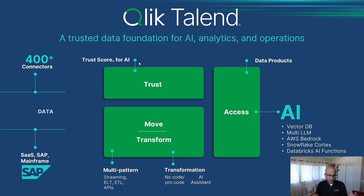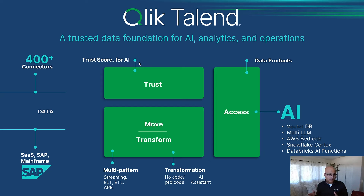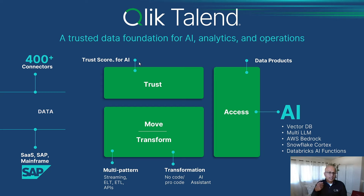Many customers are trying to address the need to bring in information and data from a variety of different sources — from SaaS services to databases to SAP ERP systems — and move it to a destination of their choice. You may want to do that through a number of different patterns, whether it's ETL, ELT, API integration, and so on. That then moves into the next phase, which is improving the quality of the data you already have, which helps drive improved quality in the insights and outcomes you derive from that.